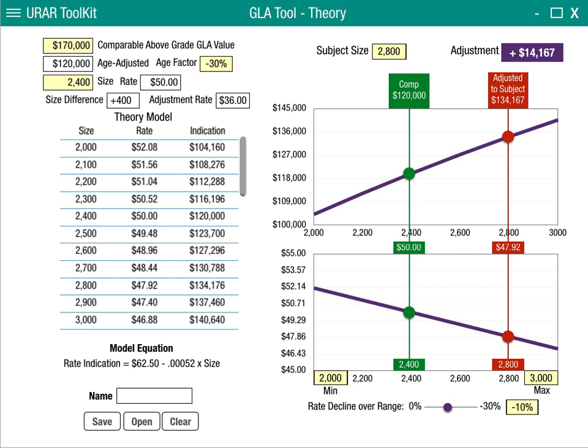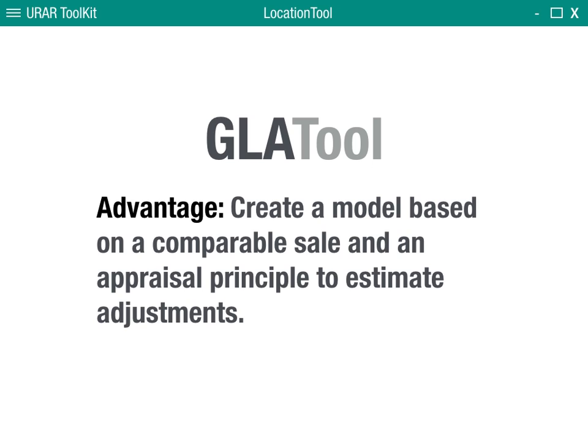The advantage of this tool is it lets us create a model based on a comparable sale and appraisal principles to estimate an adjustment. The appraisal principle is that our rate should decline as size increases. So if we know a rate and a size from a comp and a price, we should be able to build this model and get a perspective on what the value indication ought to be.